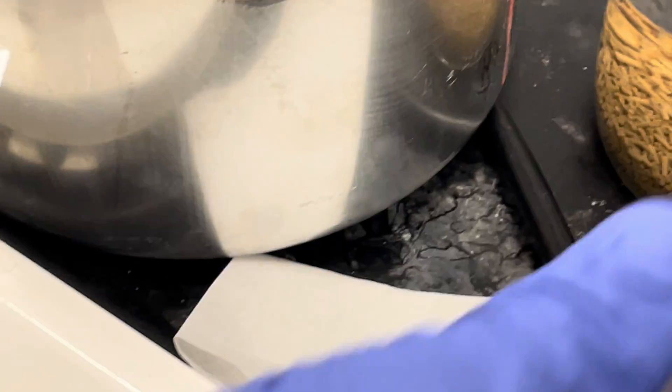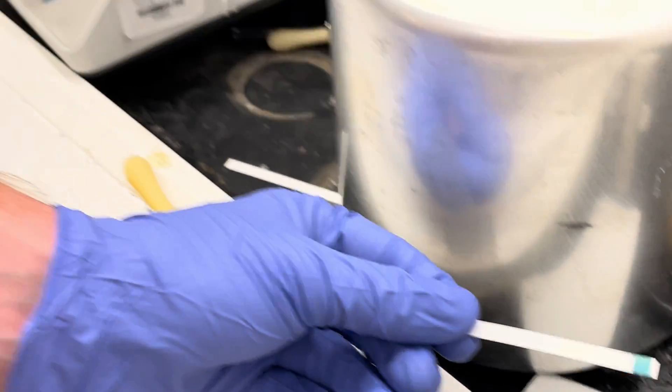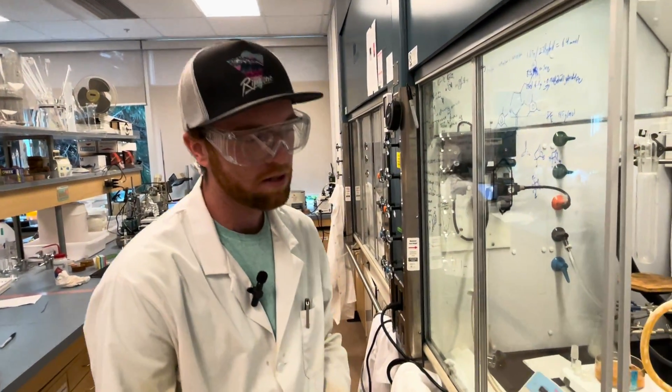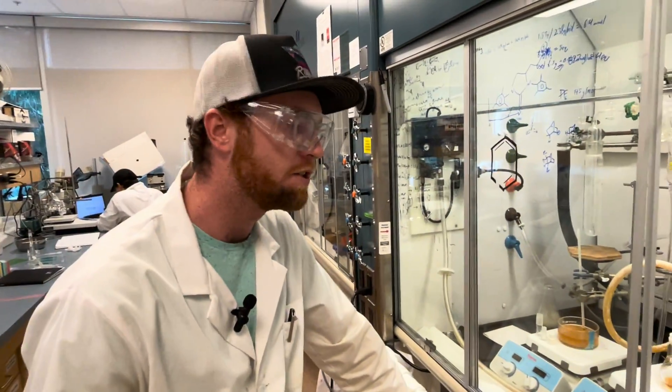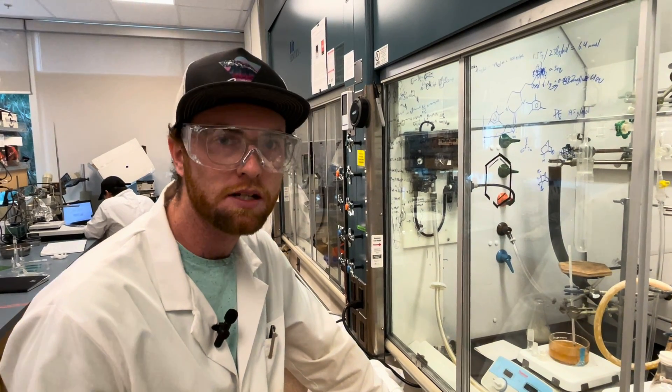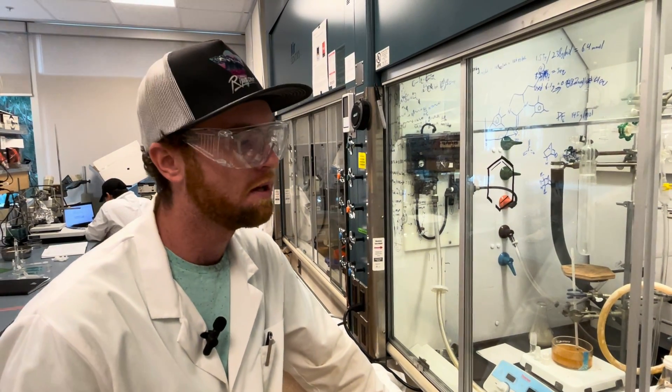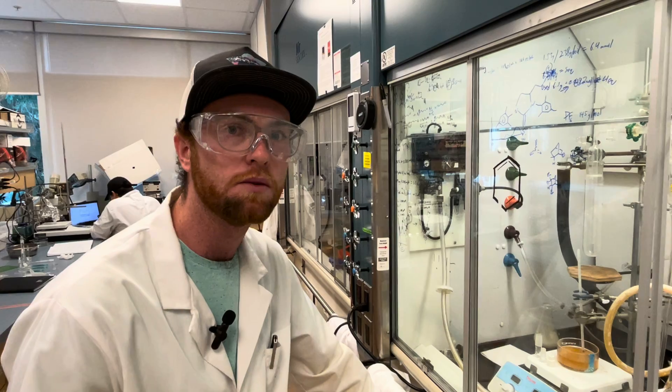So our tetrahydrofuran is giving us a pretty positive peroxide response, what that means is that this solvent should not be distilled, it should either be disposed of or have its peroxide quenched in some way before use, ferrous sulfate is typically the way that this is done.